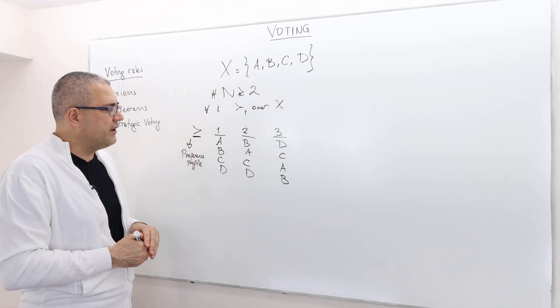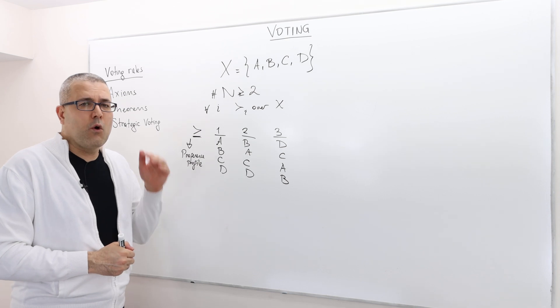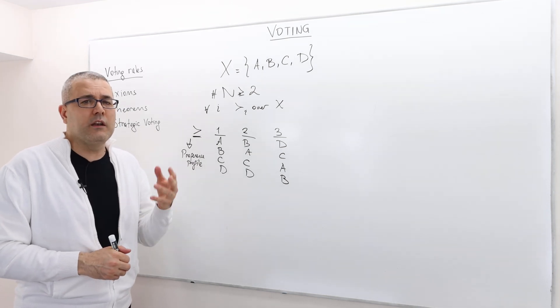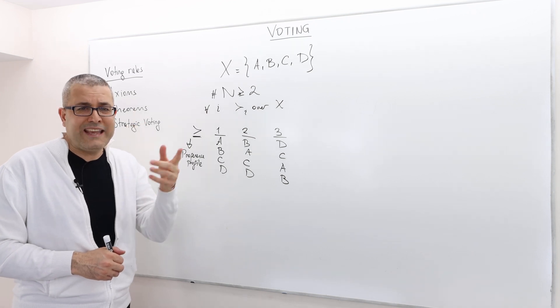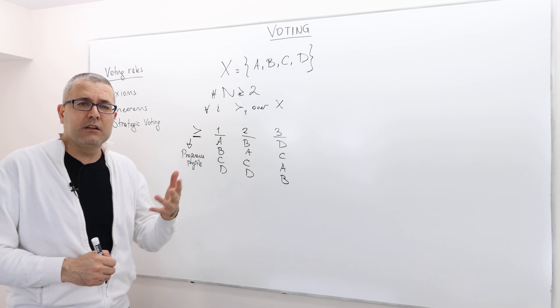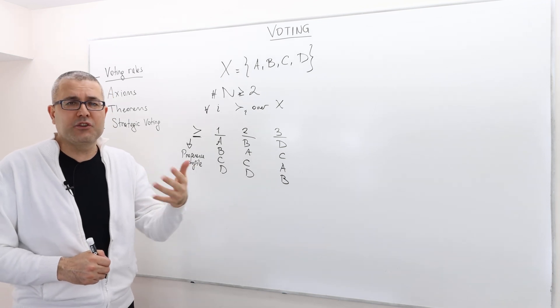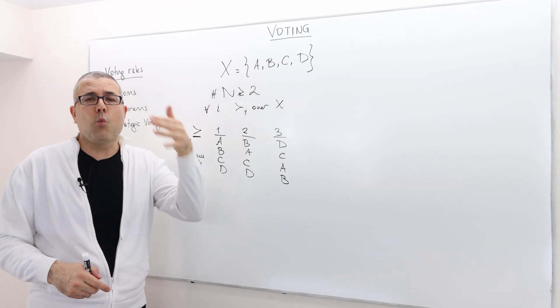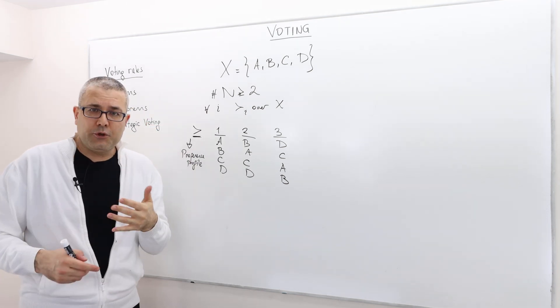In many votings you just go and vote for one candidate only. For example, which political party you want to win the election. There's a bunch of parties and you vote only for one. Well that's true, but the thing is, there are a bunch of different voting rules.